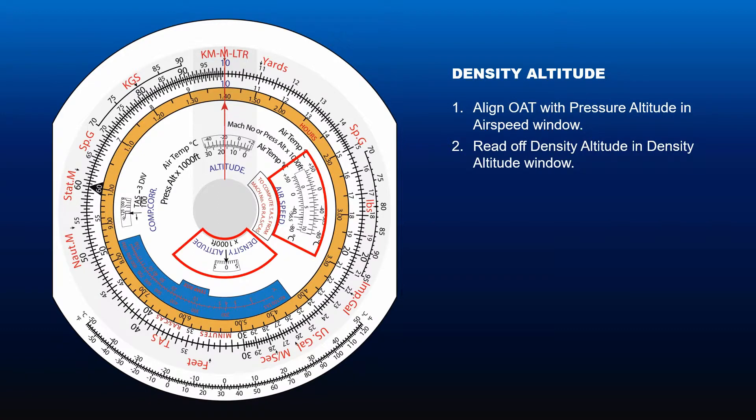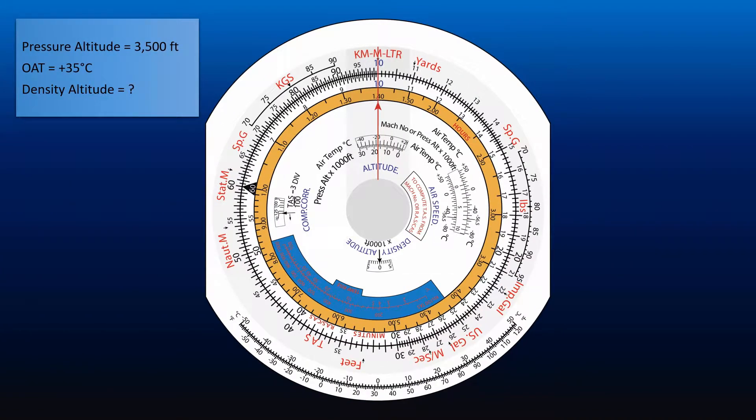Let's take a look at an example. If the pressure altitude is 3500 feet with outside air temperature of plus 35 degrees Celsius, what is the density altitude?